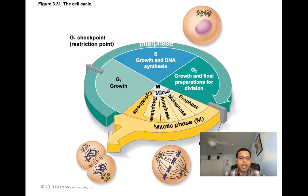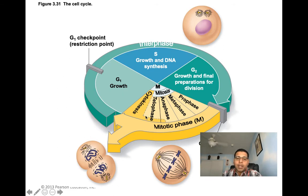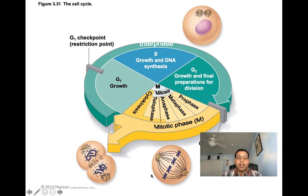Looking at the cell cycle: the G1 phase is where growth occurs, then you move to the S phase — a subphase of interphase — where growth and DNA synthesis take place. Then G2 stage involves more growth and final preparations for division. Then cell division actually occurs — here they're showing mitosis, with the mitotic phase including prophase, metaphase, anaphase, telophase, and then cytokinesis where the cytoplasm separates and two cells form. You need to recall this cell cycle and relate it to meiosis during male and female reproduction.